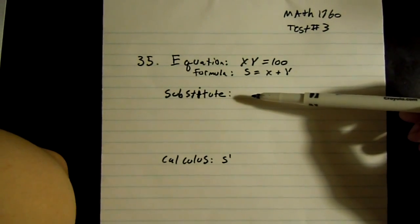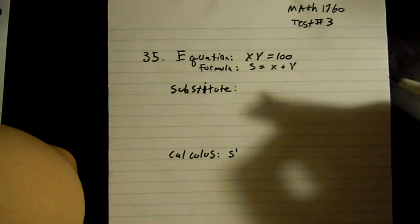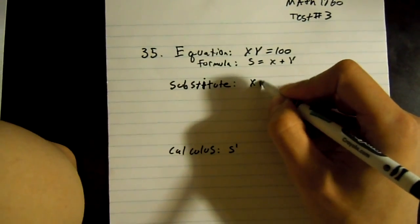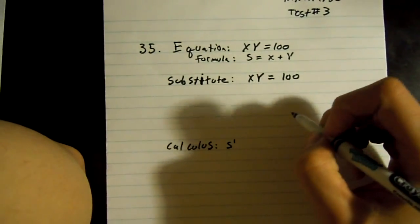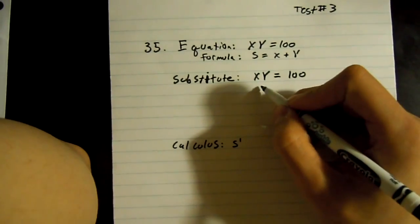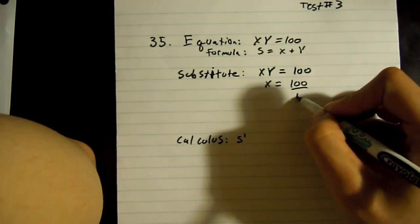We can use substitution to find x or y, but first we have to solve for x or y. So in order to do that you just take the equation and solve for x or y and you just divide 100 by x or y. So x equals 100 divided by y.